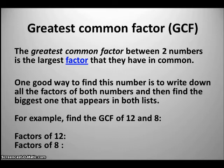So if we're looking for the greatest common factor of 12 and 8, we're going to write all the factors of 12. So we have 1 and 12, because 1 times 12 is 12, 2 times 6, and 3 times 4.